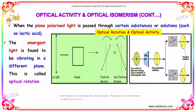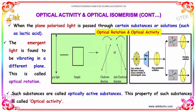When plane polarized light is passed through certain substances or solutions such as lactic acid, the emergent light is found to be vibrating in a different plane. This is known as optical rotation. Such substances are called optically active substances, and this property is known as optical activity.